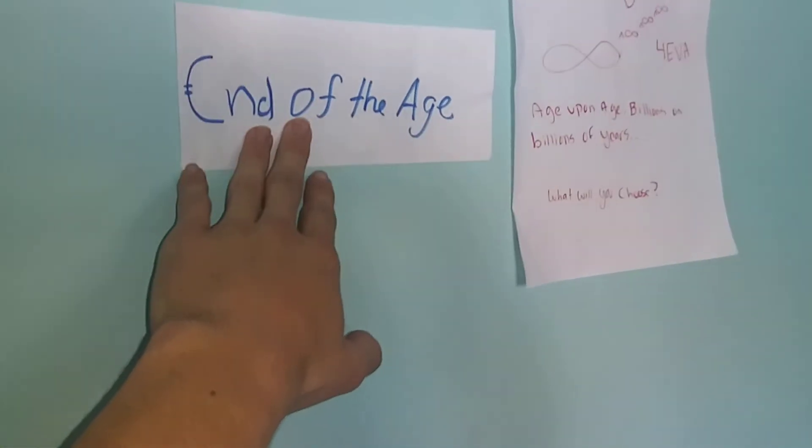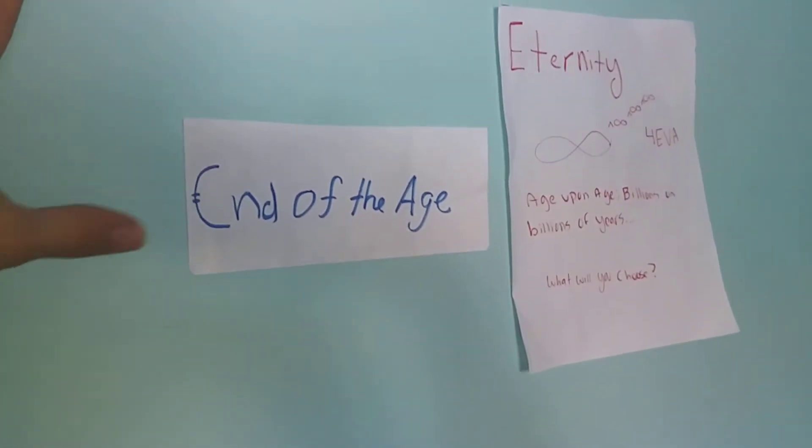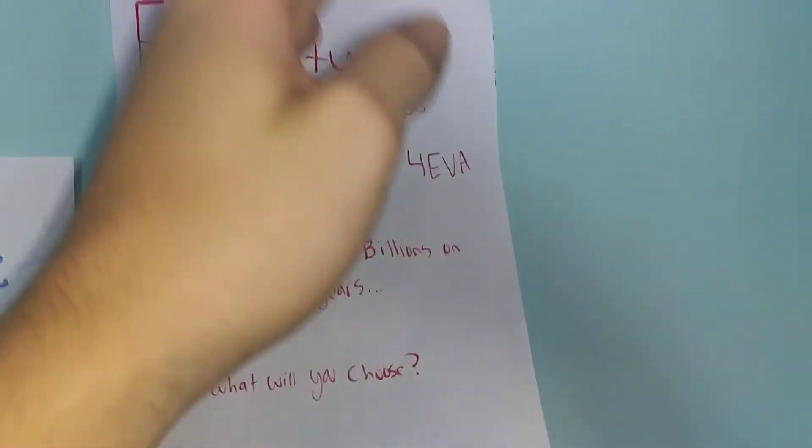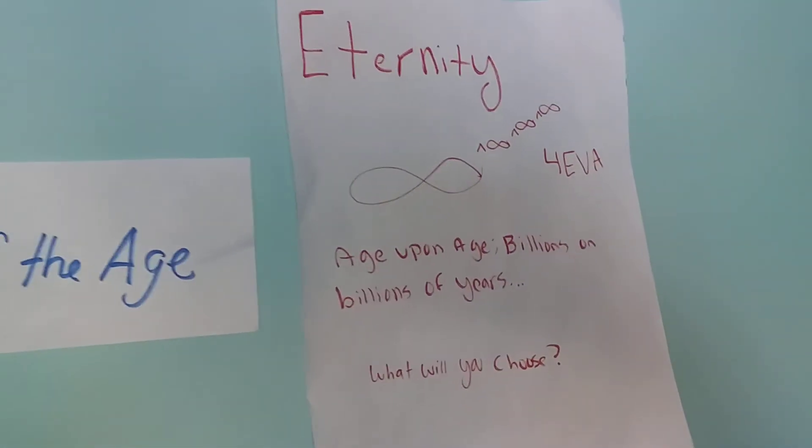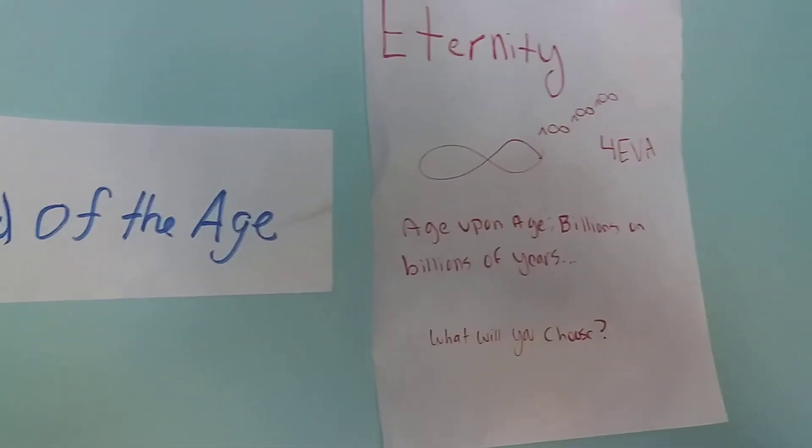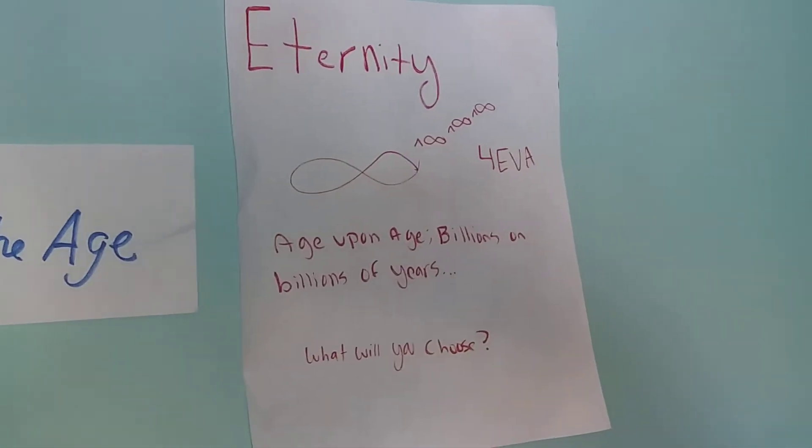The end of the age is going to come - I have no idea when, hopefully soon. But then we have eternity. It's infinite, it's forever. This is the countdown to eternity. Once this is finished, we're going to start the beginning of forever - age upon age, billions on billions of years.